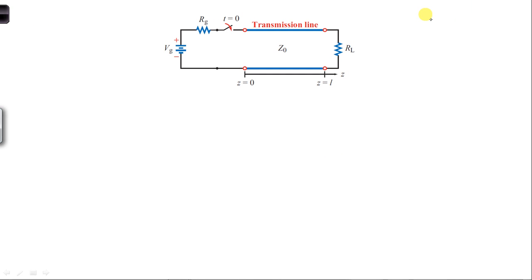In part A of this problem, we want to draw the voltage along the transmission line versus distance Z for time T equal capital T divided by 2.